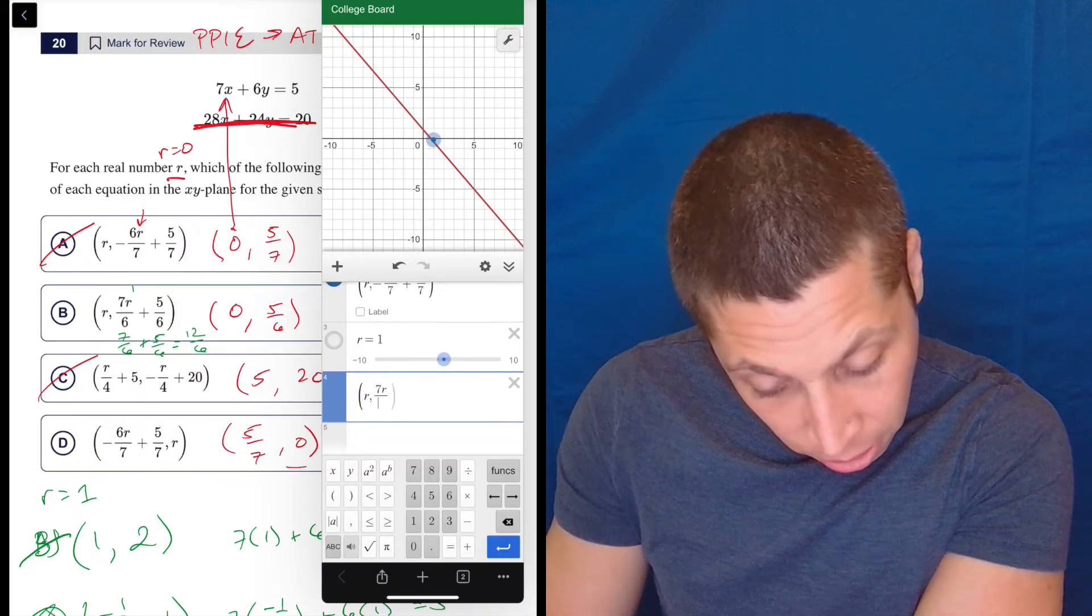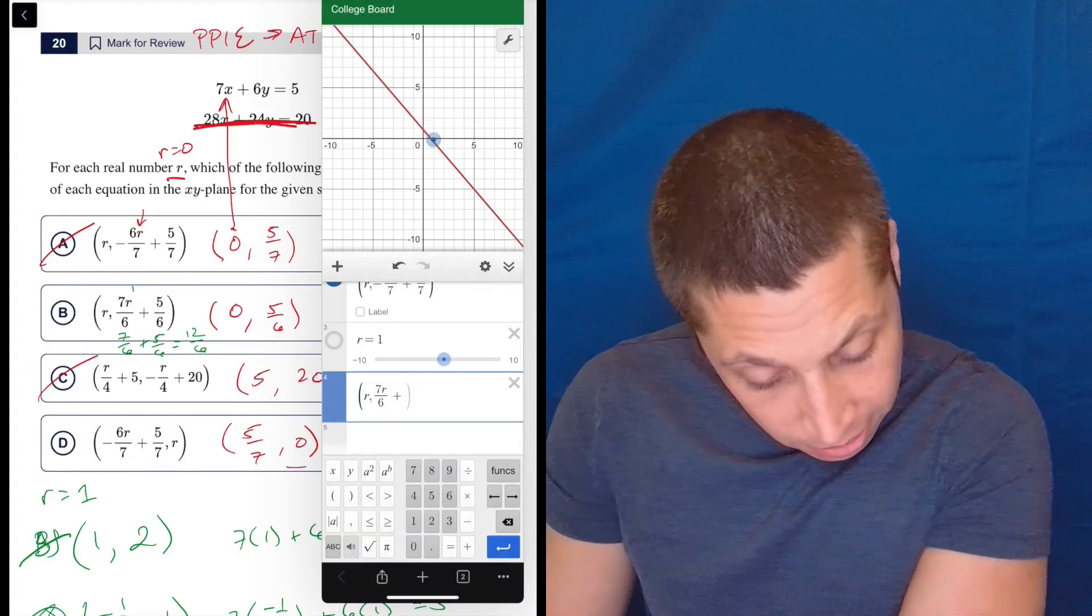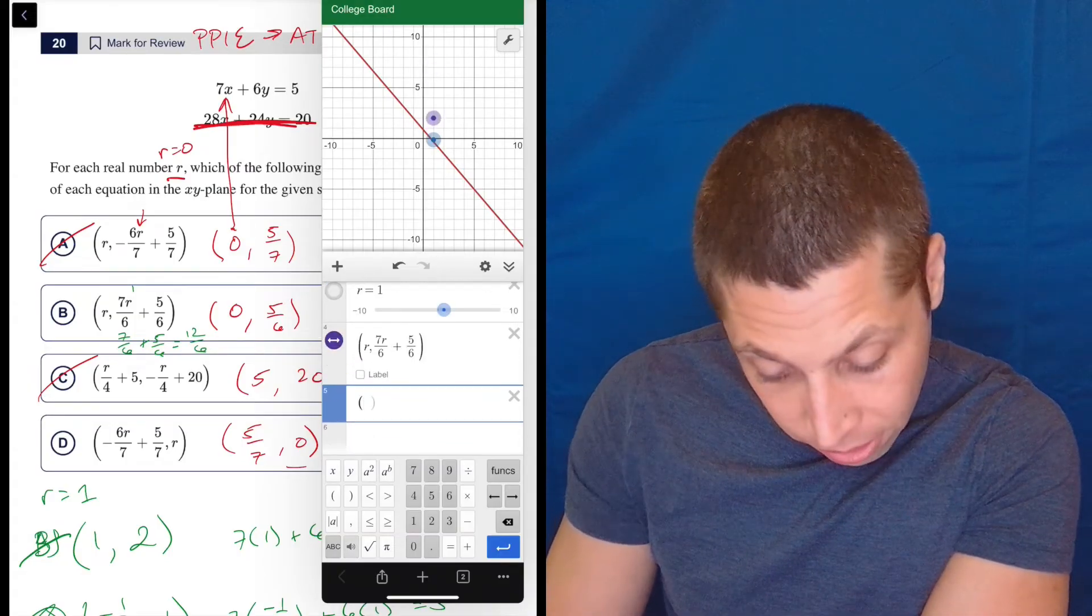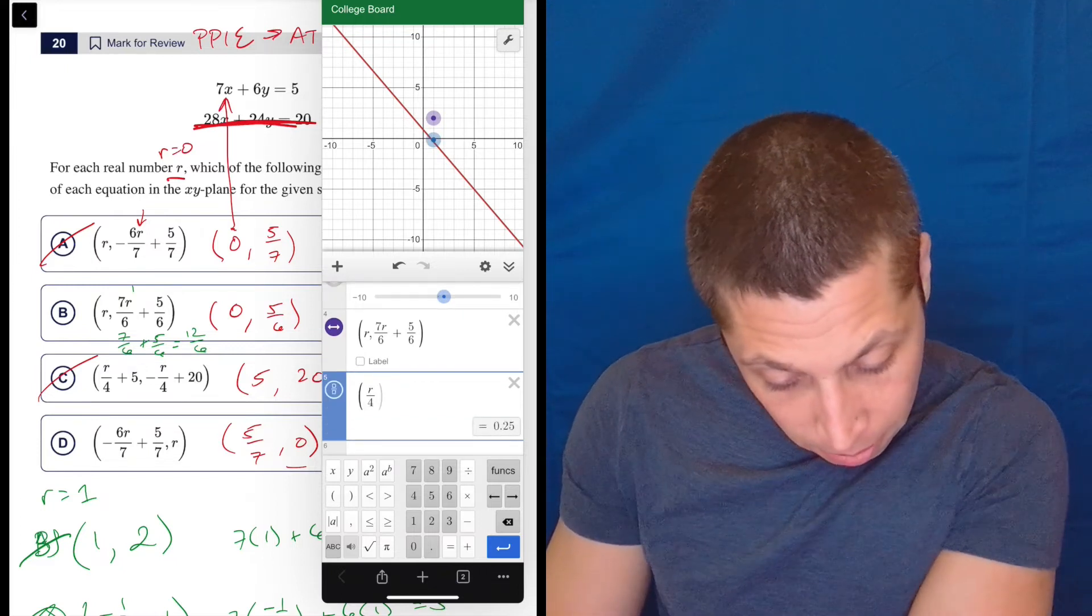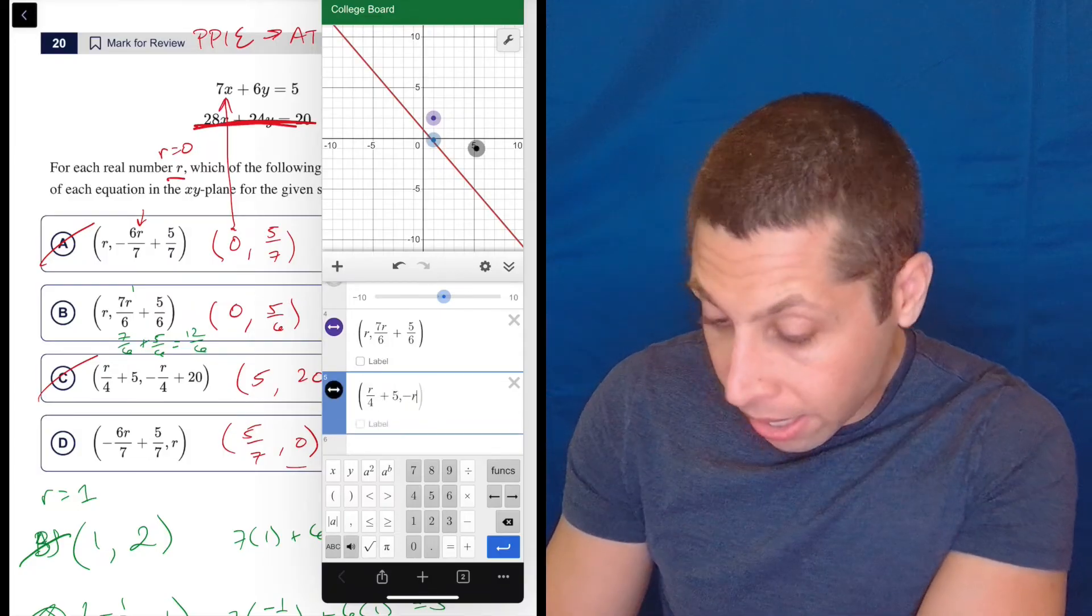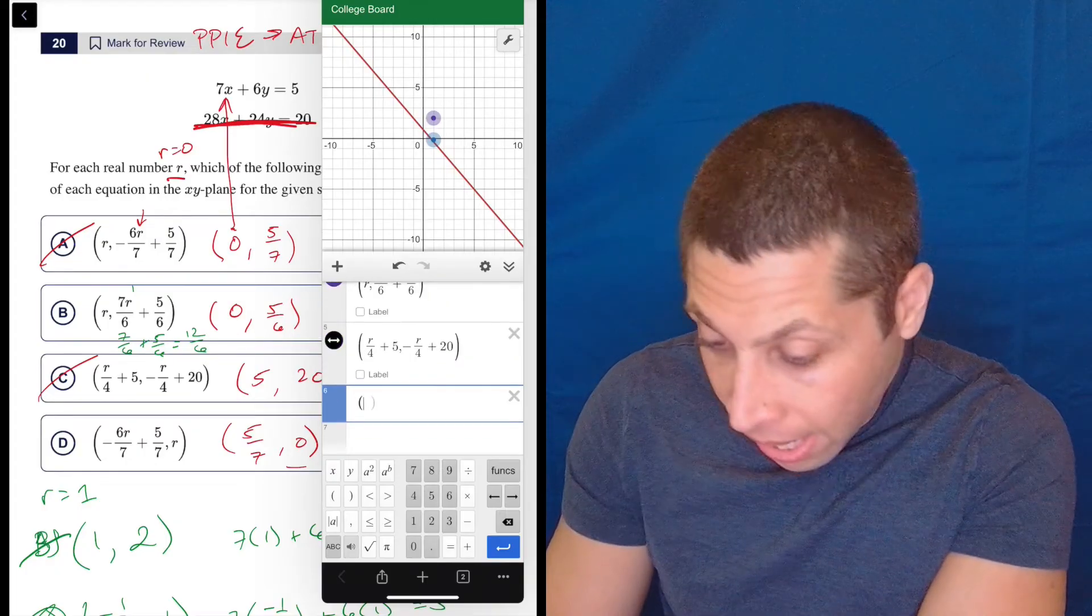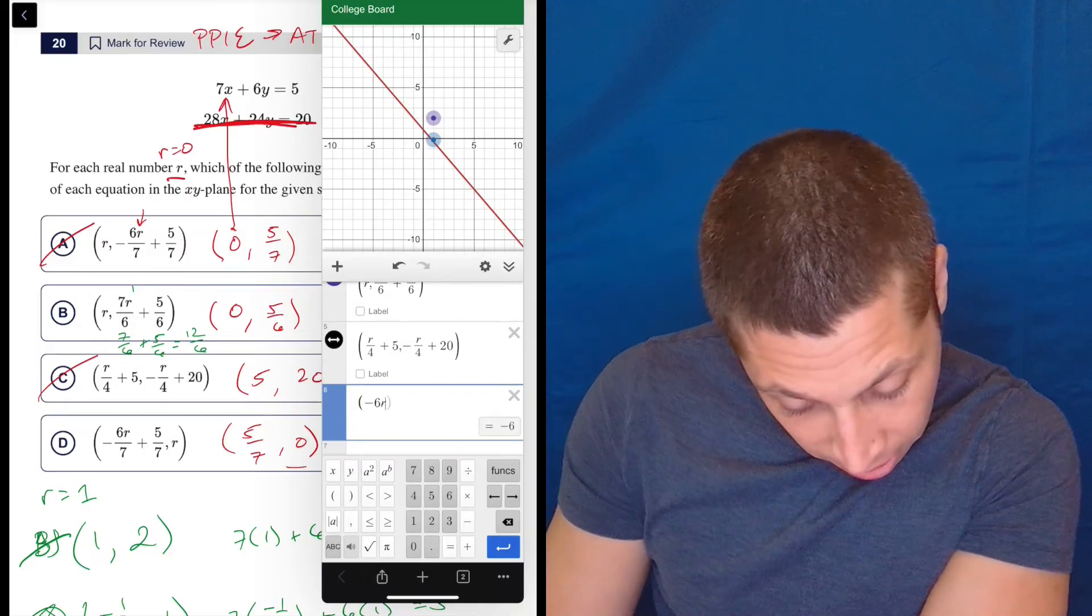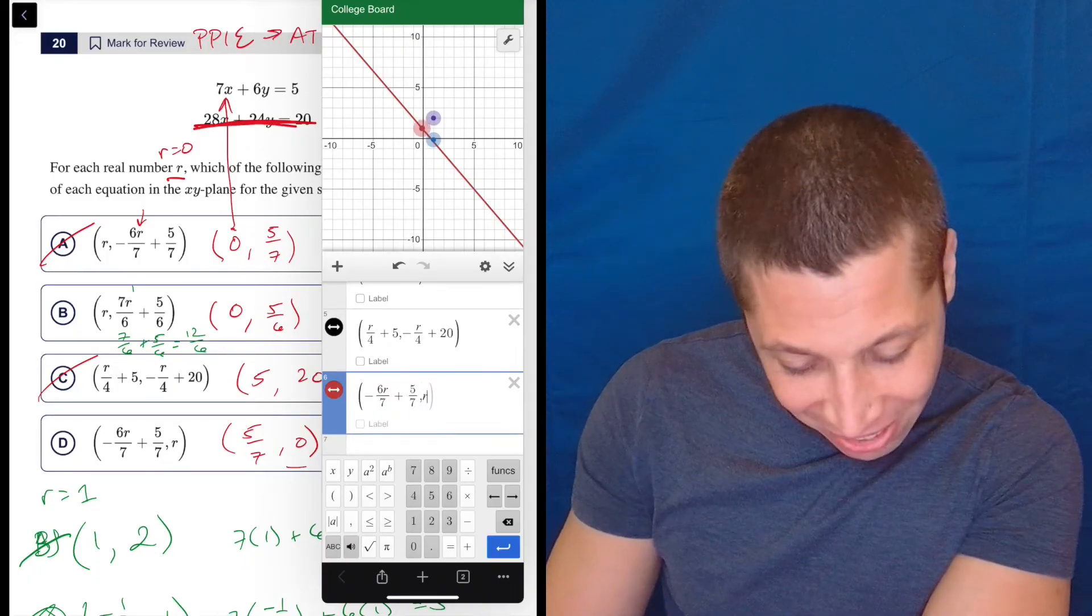So R comma 7R divided by 6 plus 5/6. So it's tedious. I don't love this way for this reason. So R over 4 plus 5 comma -R over 4 plus 20. And finally, -6R divided by 7 plus 5/7 comma R.